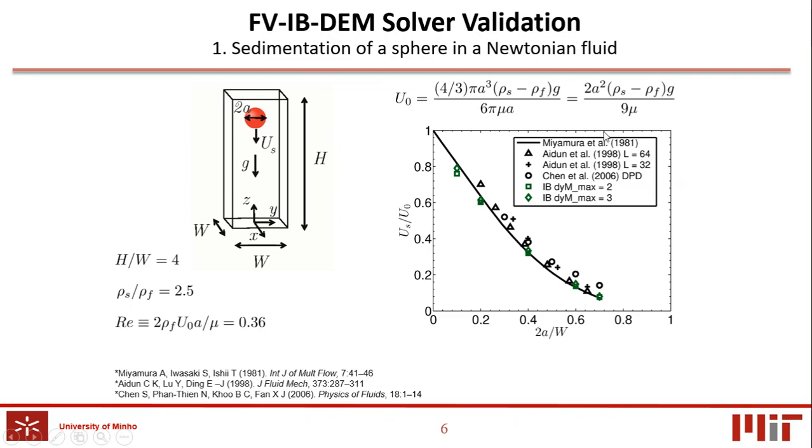The best curve fit to the experimental data of Miyamura et al., the solid line, is shown for comparison, against the lattice Boltzmann results of Aydin et al., and the dissipative particle dynamic results of Shen et al. The numerical results obtained with the newly developed solver using both of the maximum dynamic mesh refinement levels are in good agreement with the results found on the scientific literature, for all the blocker ratios considered.